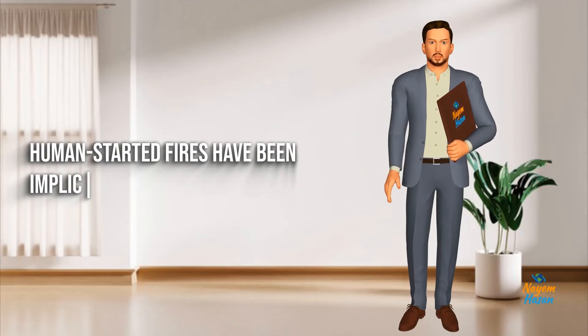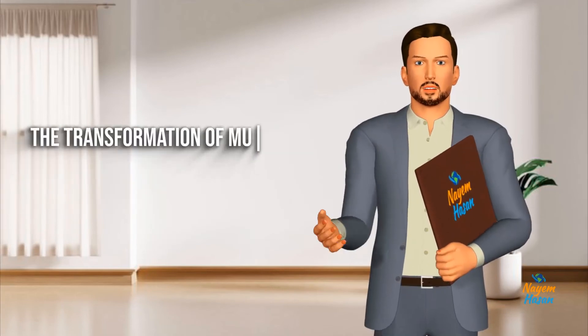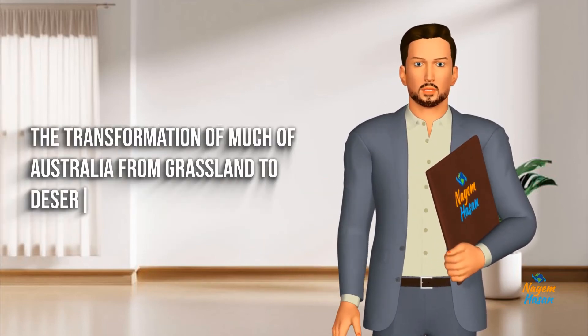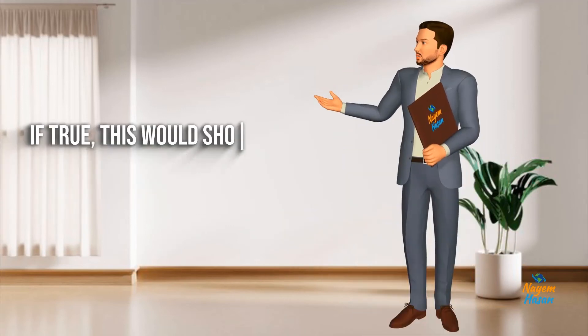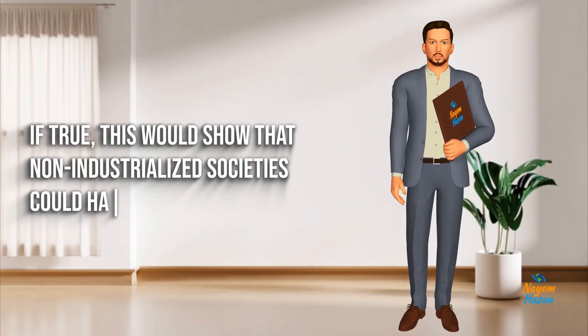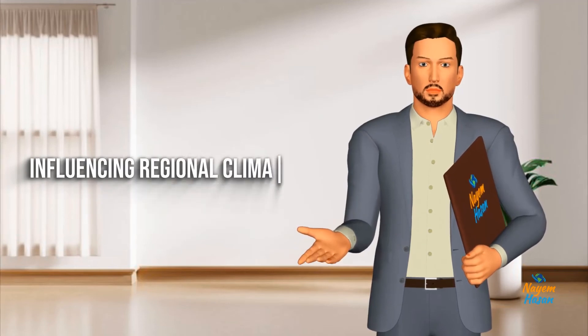Human-started fires have been implicated in the transformation of much of Australia from grassland to desert. If true, this would show that non-industrialist societies could have a role in influencing regional climate.